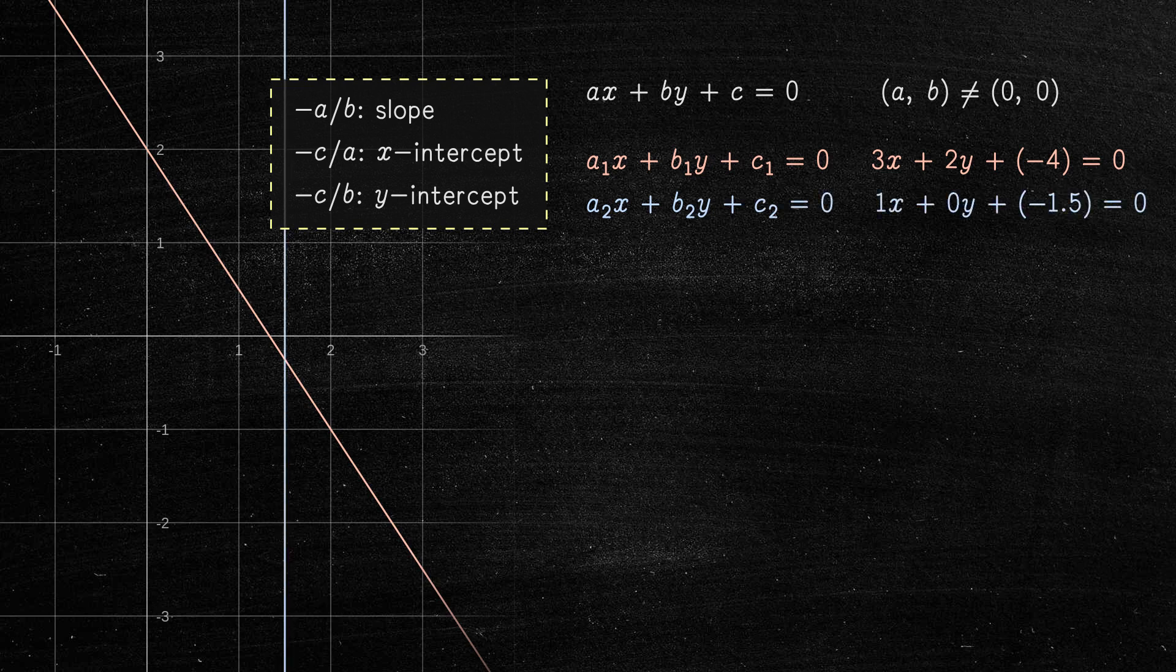The first step is to represent these two lines as two 3D vectors. We can do this by simply stacking the coefficients of each line into a vector. The second step is to take the cross product of these two vectors.